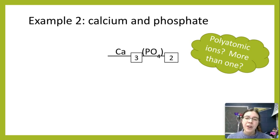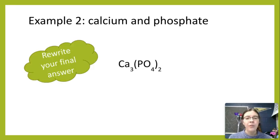The parentheses are important because they help to separate the polyatomic ion, that PO4, from that number two, so we can tell where everything is coming from. Okay. So final step then is we're going to rewrite our final answer. So Ca3, parentheses, PO4, and then two on the outside.